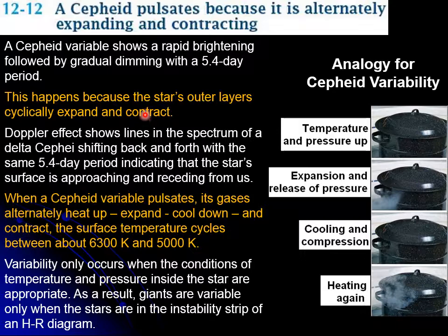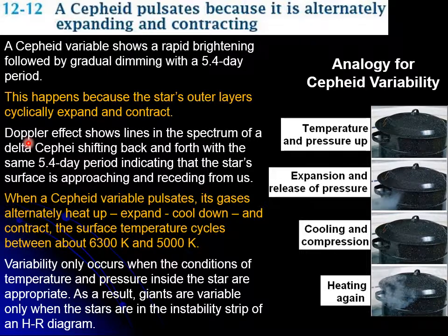To understand how we know what's happening, when the outer layers are expanding they're moving toward us fast enough to Doppler shift the light being sent to us. We can see the shift in the spectrum, telling us those layers are getting closer. When the layers contract and move away, the Doppler shift goes in the opposite direction, so we can observe both phases.